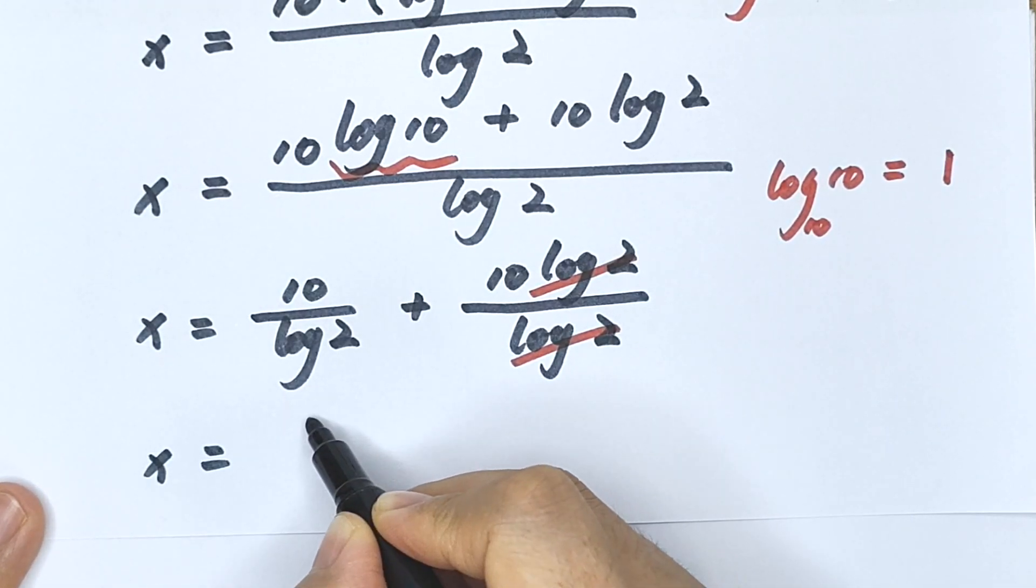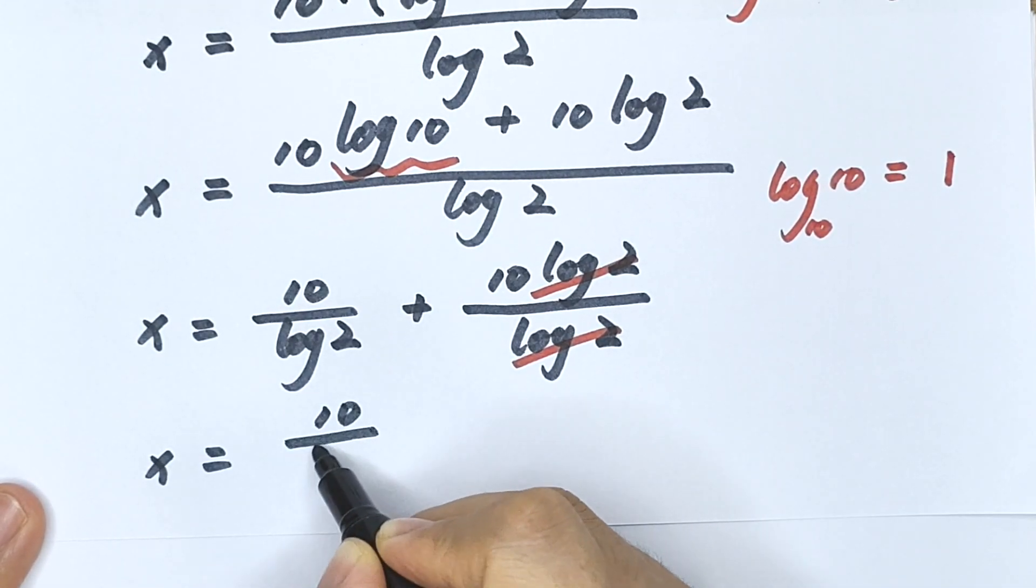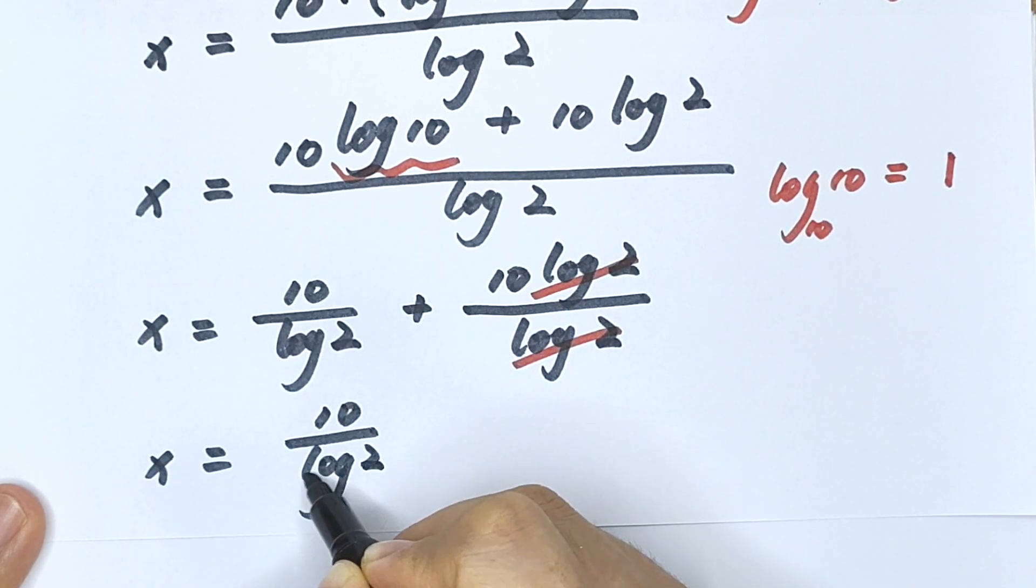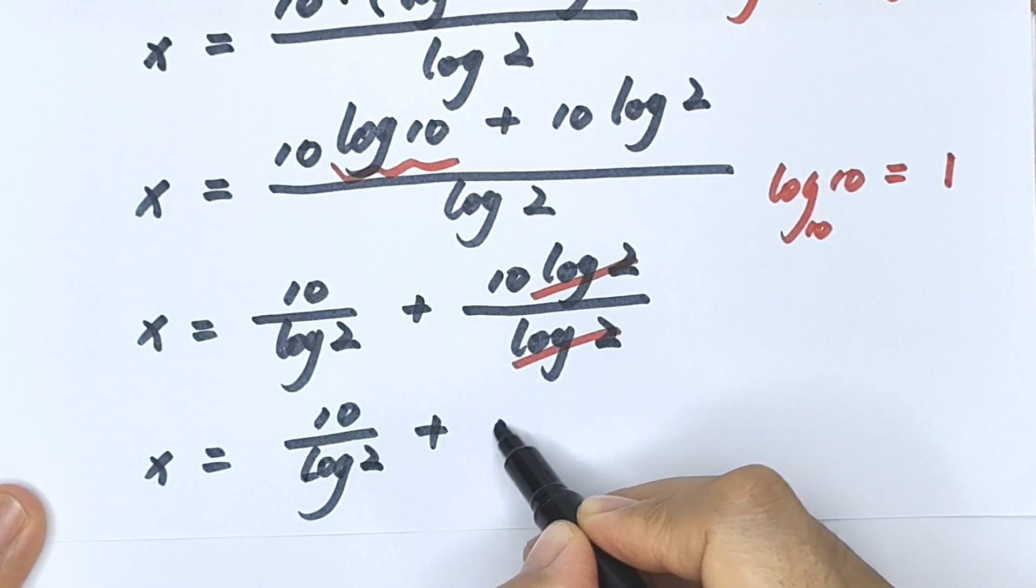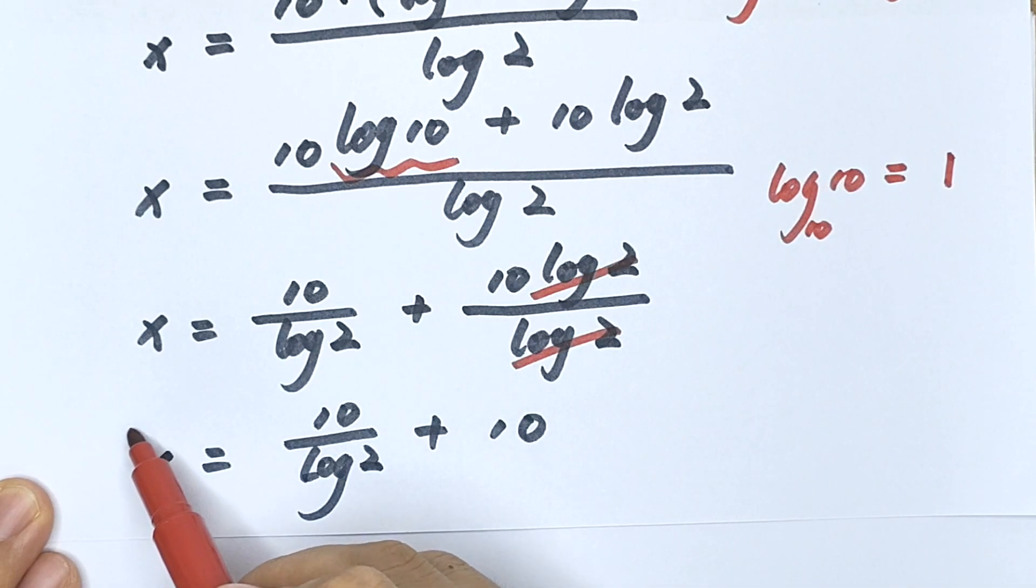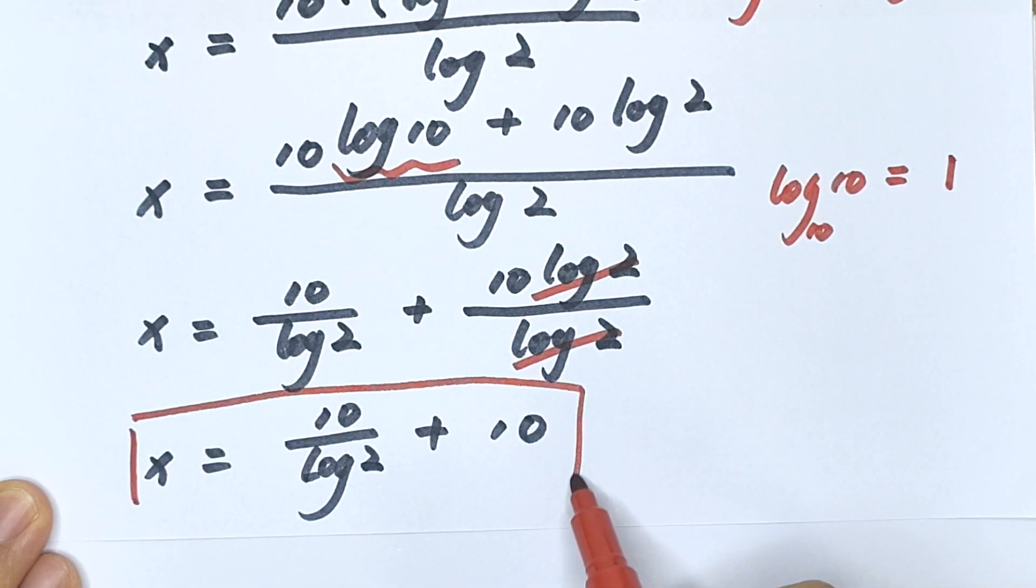So x equals 10 divided by log 2 plus 10. This is the final answer.